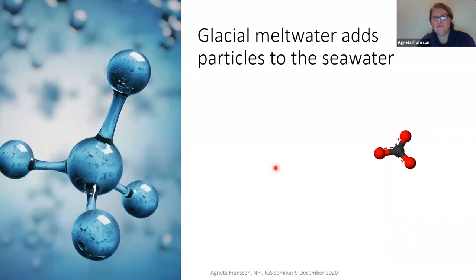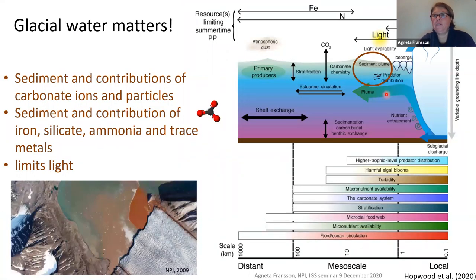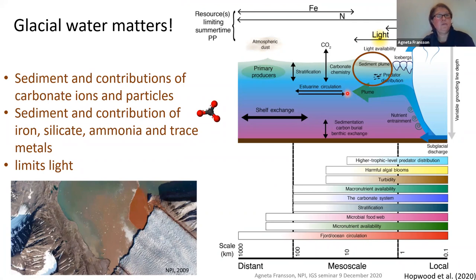Glacial meltwater adds particles to the seawater. From the bedrock, sediment plumes form at the bottom of the glacier and near the fjord bottom, then rise with fresher water to the surface. This sediment contributes carbonate ions and particles to the seawater, but also contributes iron, silicate, ammonia, and trace metals — of large importance for primary production and photosynthesis. However, if there is a lot of sediment, it also limits light, which has a negative effect on primary production.